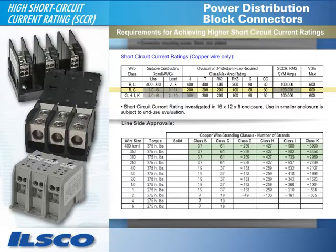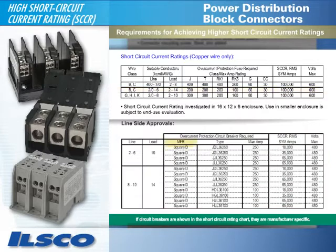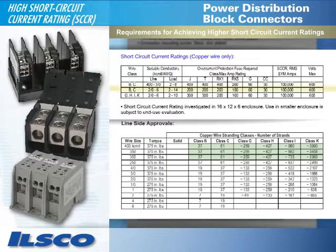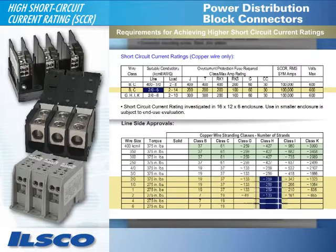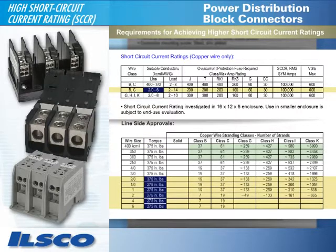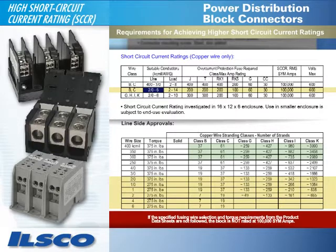As a side note, if circuit breakers are shown in the short-circuit rating chart, note that they are manufacturer specific. Looking again at the line-side approval chart, since the line-side conductor range in this example is 2-0 to 6, the approved number of strands for each wire class is indicated in the highlighted cells. The necessary torque for this range of wire sizes is indicated here. Again, if the specified fusing, wire selection, and torque requirements from the product data sheets are not followed, the block is not rated at 100,000 SIM amps — it is rated at 10,000 SIM amps.